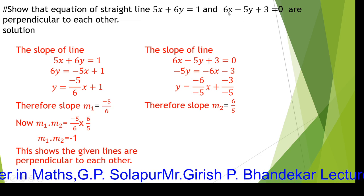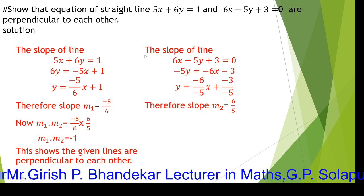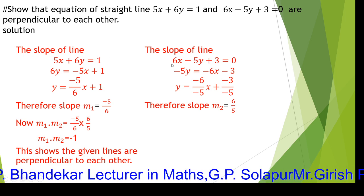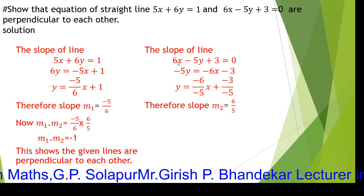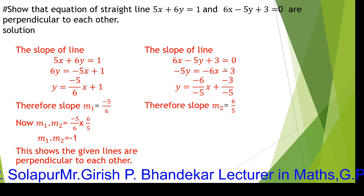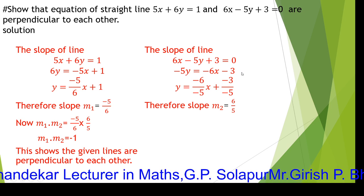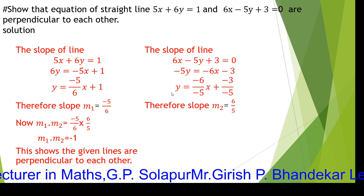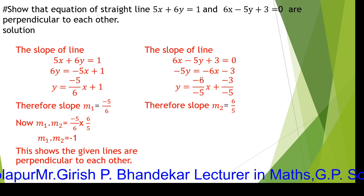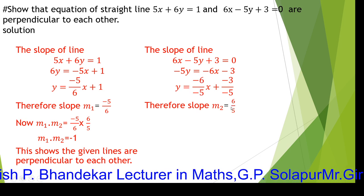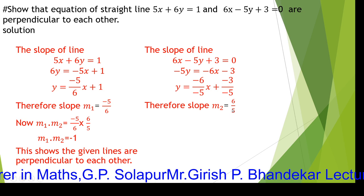The second line is 6x minus 5y plus 3 equals 0. Keeping minus 5y as it is, we transform 6x and 3 to the other side, giving minus 5y equals minus 6x minus 3. The coefficient of y is minus 5, so we divide throughout by minus 5. We get y equals 6 upon 5 times x plus 3 upon 5. The coefficient of x is 6 upon 5, so the slope of the second line M2 equals 6 upon 5.